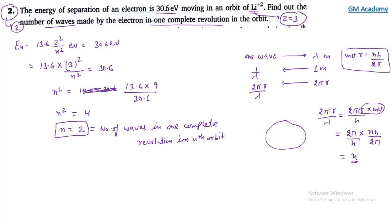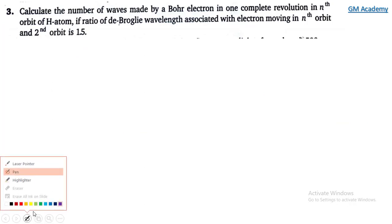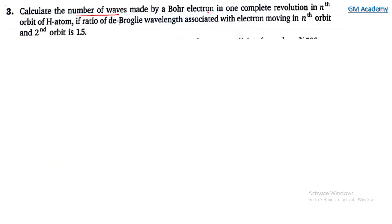So the correct answer for the number of waves is n = 2. Next is the third question: Calculate the number of waves made by a Bohr electron in one complete revolution in the nth orbit of hydrogen atom, if the ratio of de Broglie wavelength associated with electron moving in nth orbit and second orbit is given.